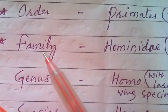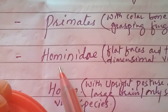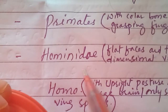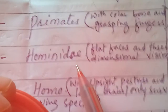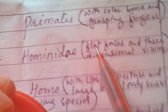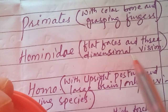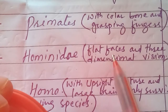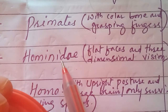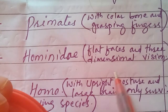Then comes the family. The family of the human being is Hominidae. Organisms belonging to the family Hominidae have features like a flat face and three-dimensional vision. Humans belong to this Hominidae family, meaning human faces are flat and they have three-dimensional vision.